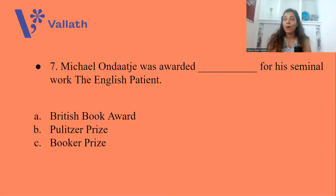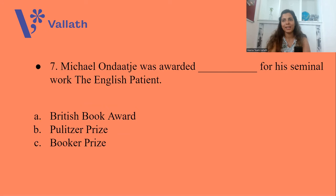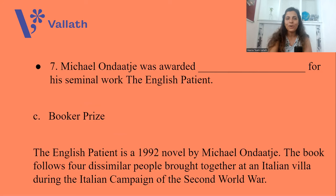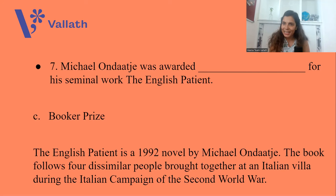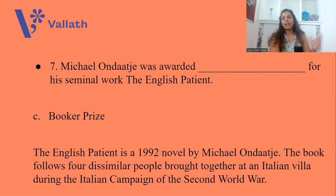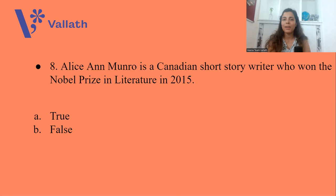Question number seven: Michael Ondaatje was awarded what for his seminal work The English Patient? A. British Book Award, B. Pulitzer Prize, or C. Booker Prize. The answer is option C, Booker Prize. The English Patient is a 1992 novel by Ondaatje. It follows four dissimilar people brought together at an Italian villa during the Italian campaign of the Second World War. A Canadian nurse called Hana takes care of a patient famously known as the English Patient — love stories happen, the past returns.